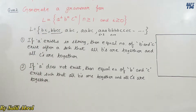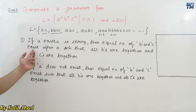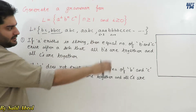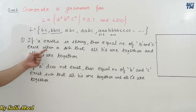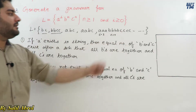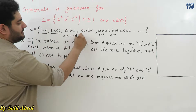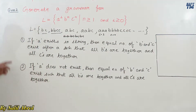We conclude two points for generating our grammar. First, if 'a' exists in the string, then an equal number of b's and c's exist after 'a', such that all b's are together and all c's are together. So a string like aabcbcbc is not valid — all b's must be grouped, then all c's.